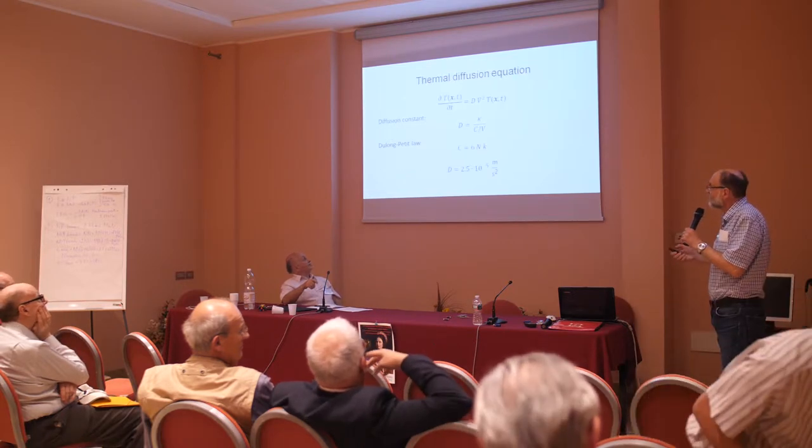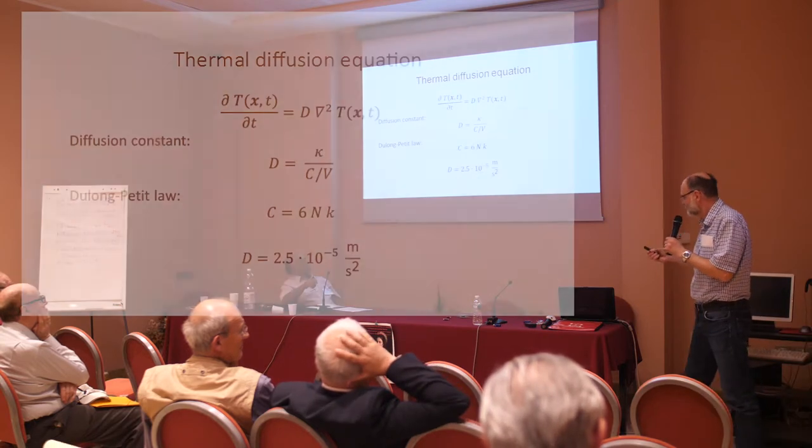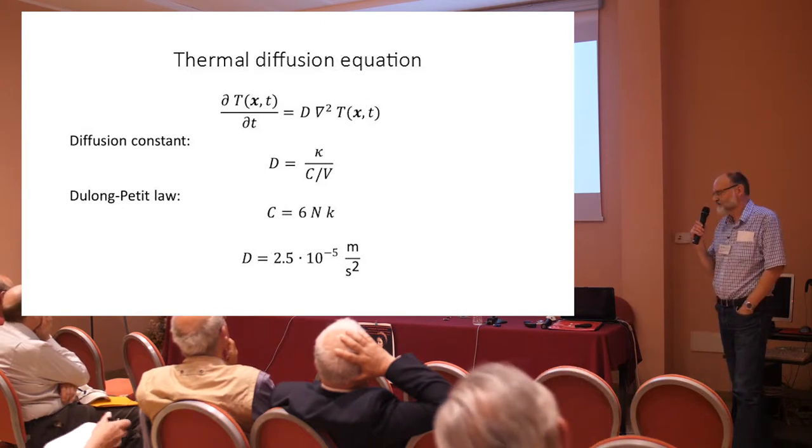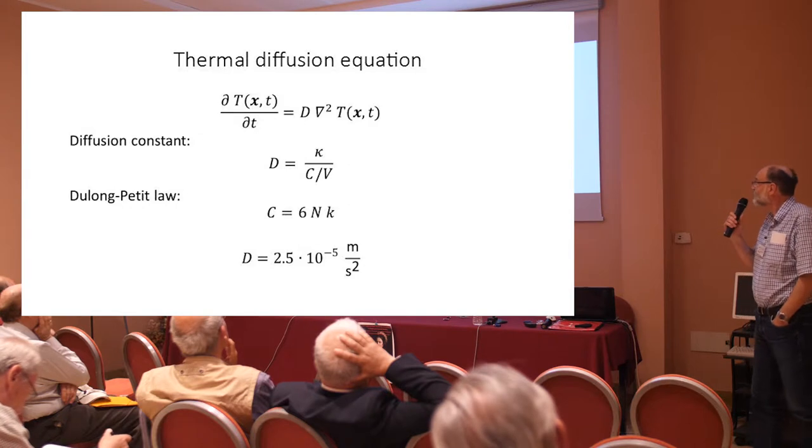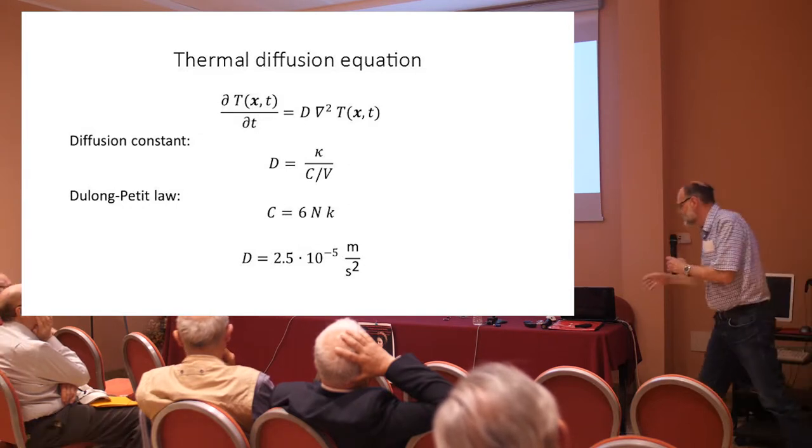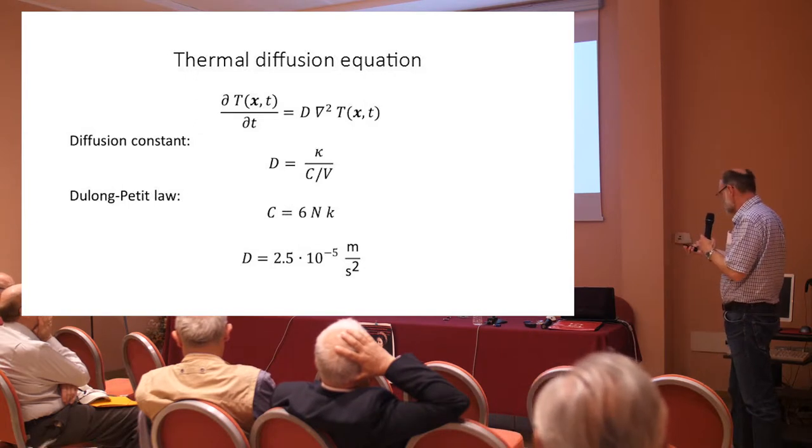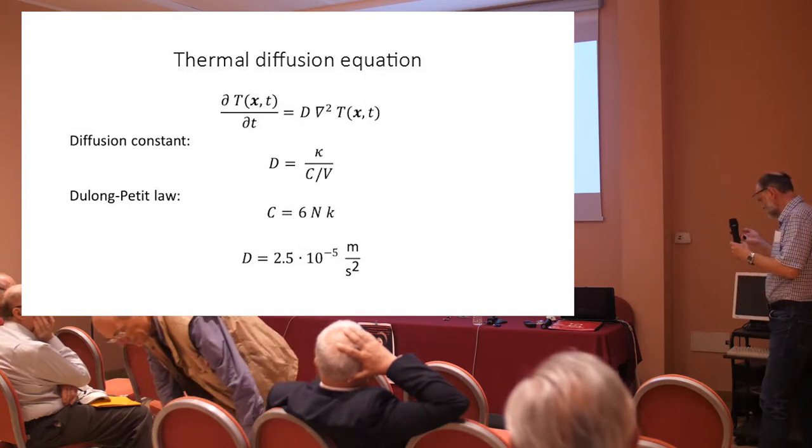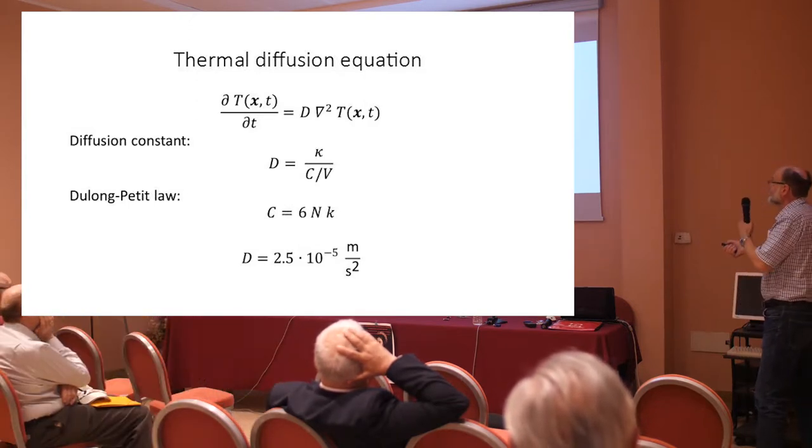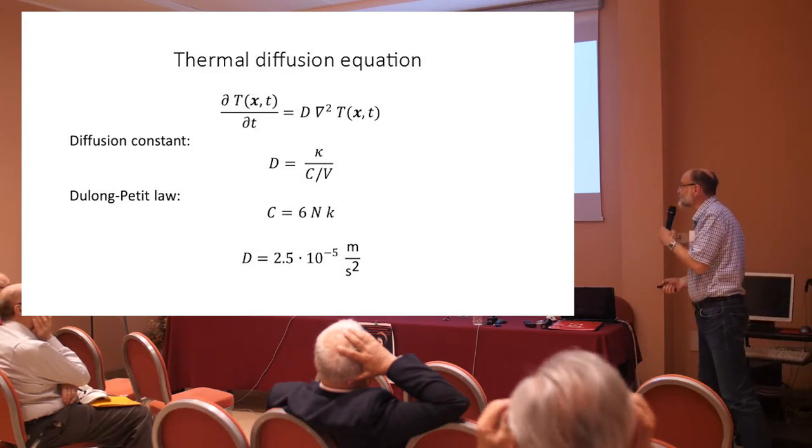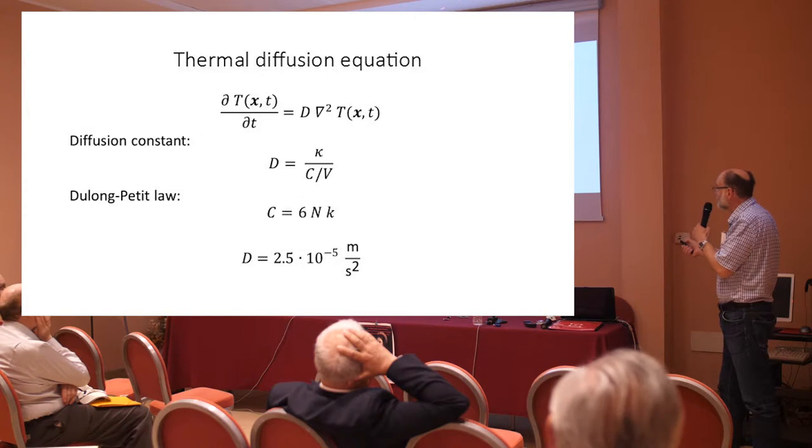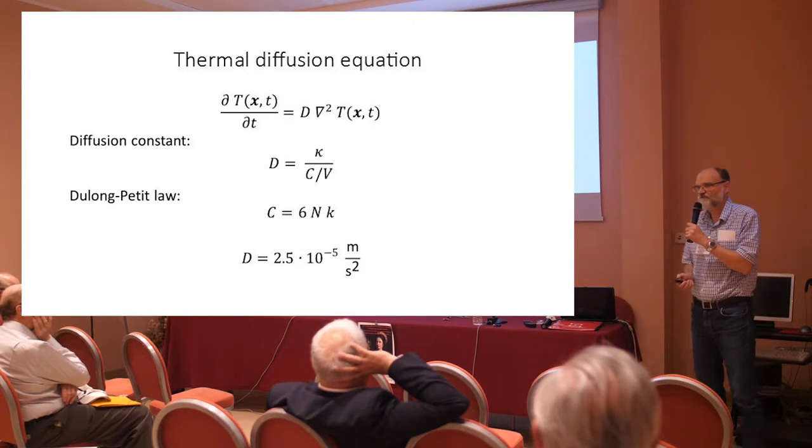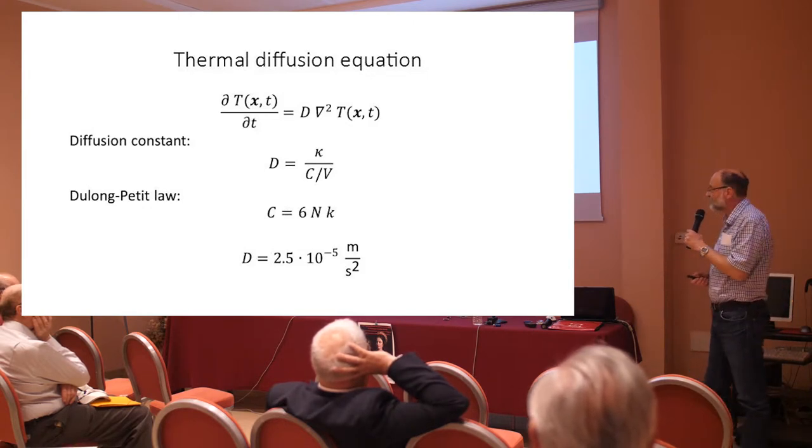I will consider the standard thermal diffusion equation, ∂T(x,t)/∂t = D∇²T(x,t). D is the diffusion constant, which can be expressed by the thermal conductivity κ and the specific heat C per volume.